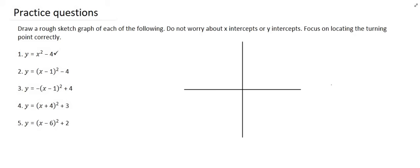For number two, we can see that it's definitely a smiling parabola because the number in front of the x is not negative. It has moved one unit to the right — remember, the horizontal shifts are opposite: minus means to the right, plus means to the left. And then it has also moved four units down. So the new turning point will be located as follows, and there we have the parabola.